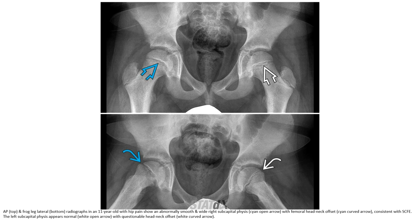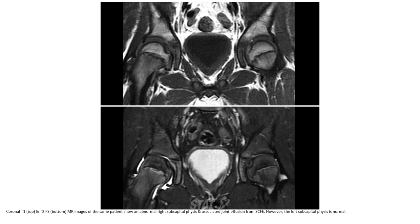AP (top) and frog-leg lateral (bottom) radiographs plus T1 (top) and T2 fat-saturated (bottom) MRI images of an 11-year-old with hip pain show: on the right, an abnormal, smooth, and wide subcapital physis with femoral head-neck offset, consistent with slip capital femoral epiphysis. The left subcapital physis appears normal with questionable head-neck offset. MRI of the same patient shows abnormal right subcapital physis with associated joint effusion from the slip. The left subcapital physis appears not involved.